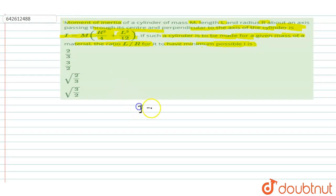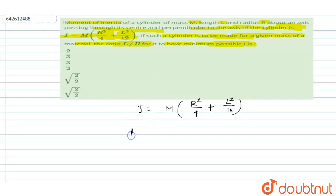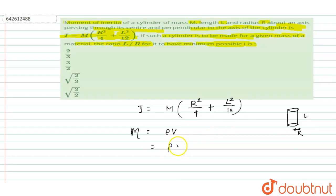The moment of inertia is I = M(r²/4 + l²/12). Since we know that mass can be written as M = ρ × volume, and for a cylinder of length l and radius r, the volume is πr²l. Therefore, M = ρ × πr²l.